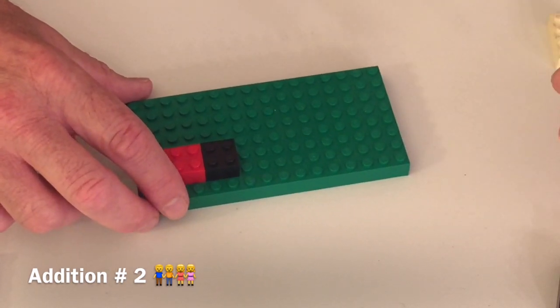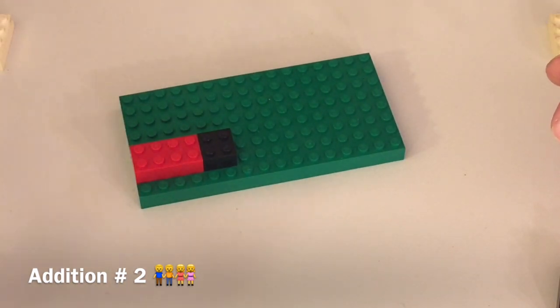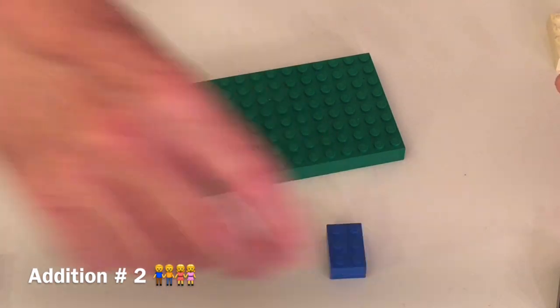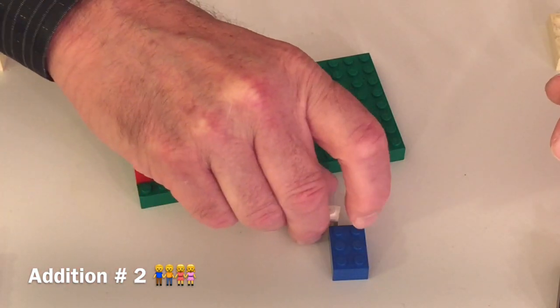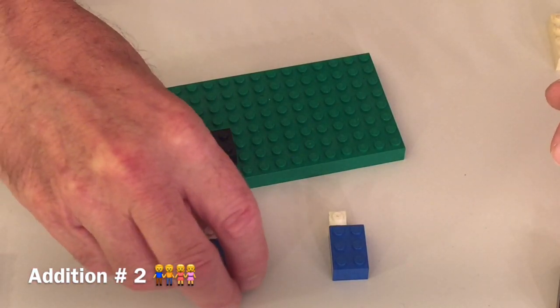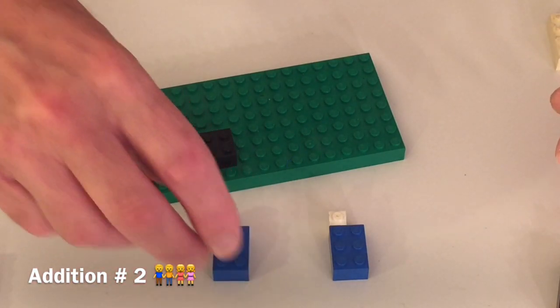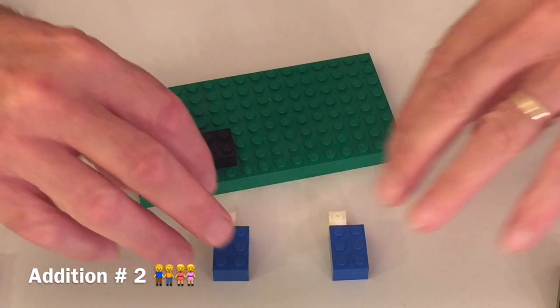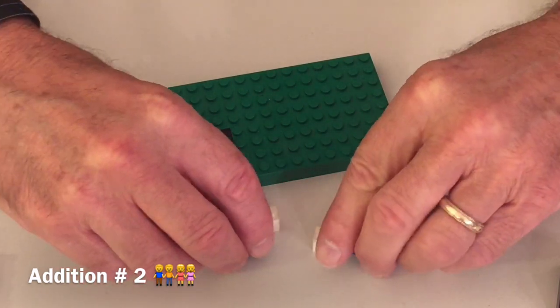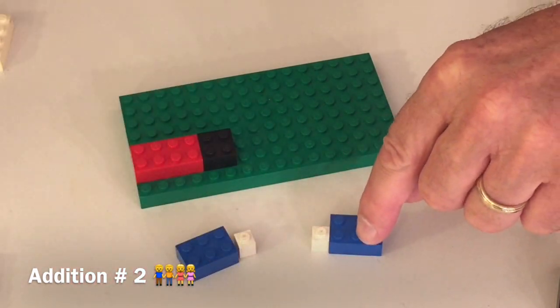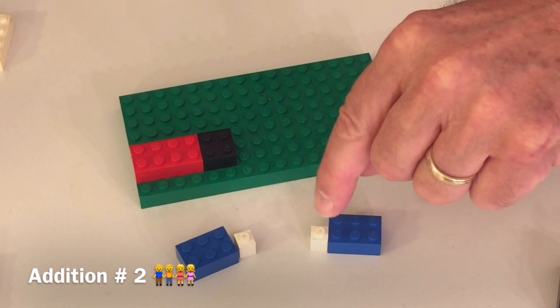Let's try another one. Let's try, let's see, seven. And we'll add another seven to it. What will we get when we put these two together? Here's seven: one, two, three, four, five, six, seven.